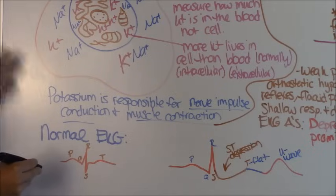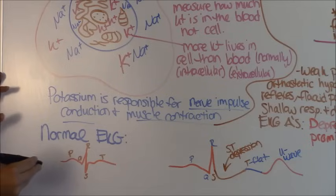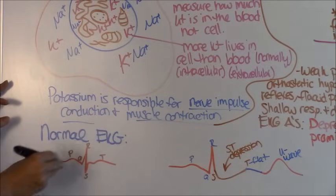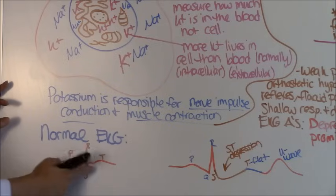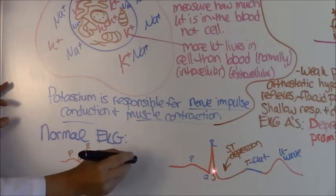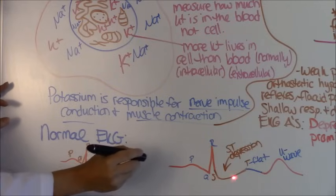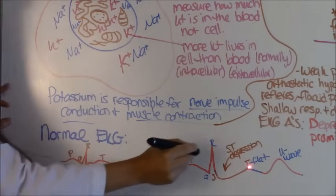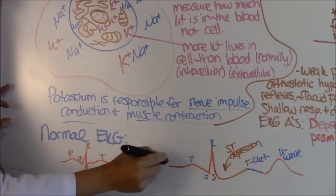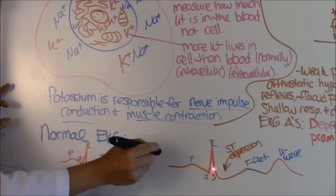Whenever you're paying attention for hypokalemia, number one is an ST depression. The ST segment goes from the S to here, and this part is going to be depressed. Normally what you'll have is a line on your EKG and everything needs to be on that line, but in hypokalemia it's depressed below the line. So you'll have ST depression.